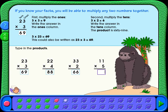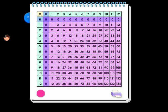To use the multiplication and division table, click on the button with the multiplication and division signs. To multiply, click on a number in the green area on the left side of the chart. Find the number you want to multiply it with at the top. You find the product where the highlighted row and column meet.